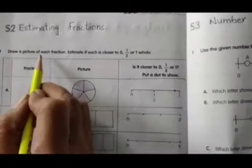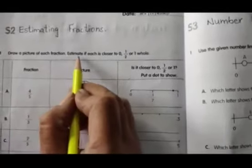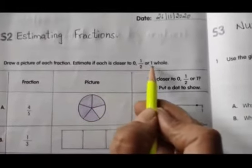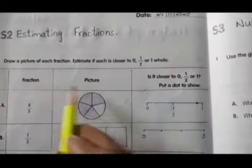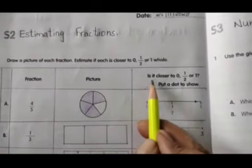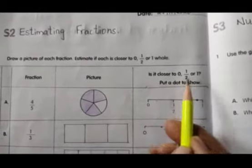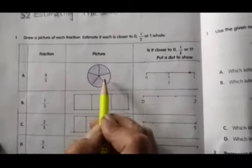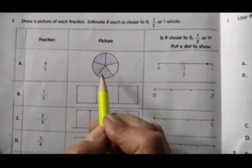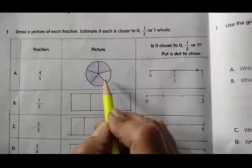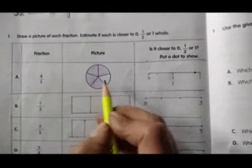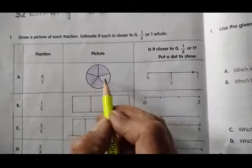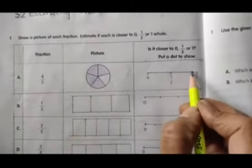First question, draw a picture of each fraction. Estimate if each is closer to 0, half, or 1 whole. Here fraction, picture, and is it closer to 0, half, or 1. First bit, 4 by 5. Out of 5, 4 parts are shaded children. It is nearest to 0, half, or 1 children? It is 4 parts are shaded, 1 part is left, so it is closer to 1.